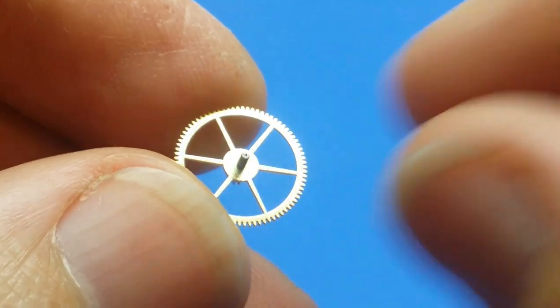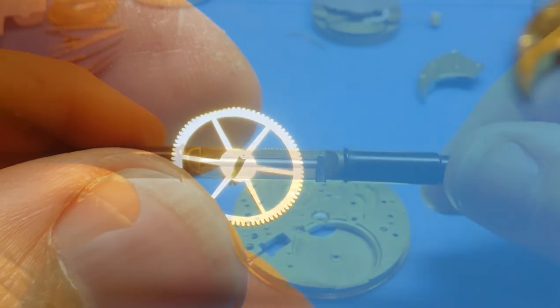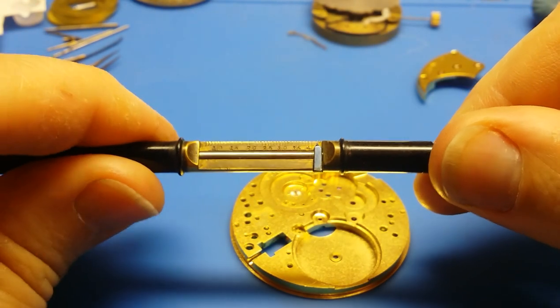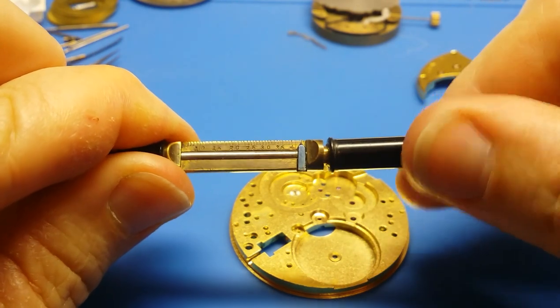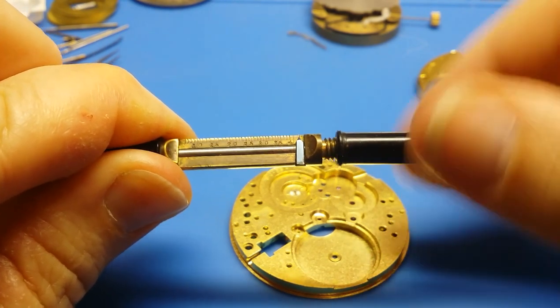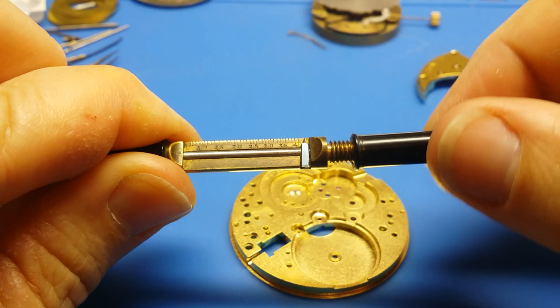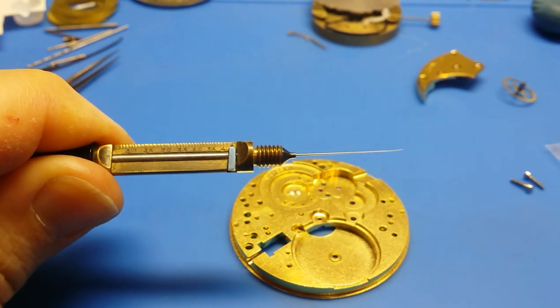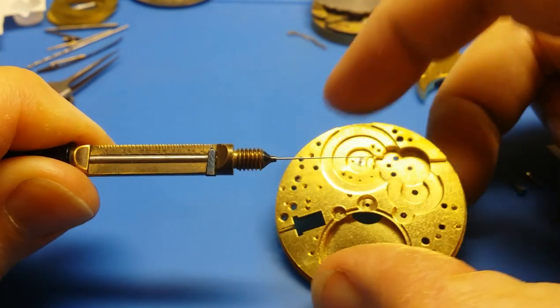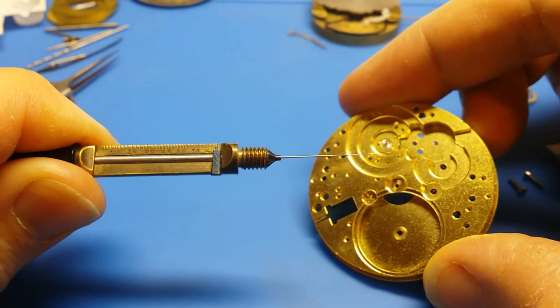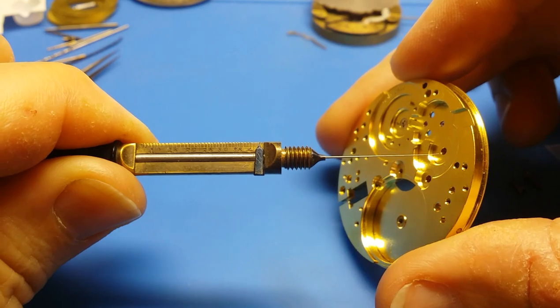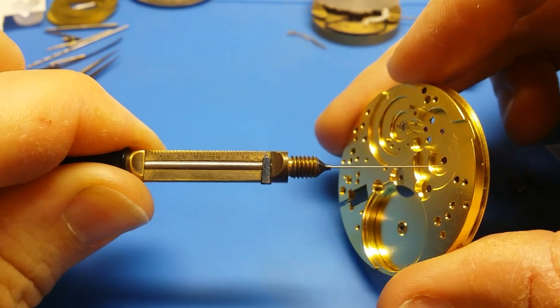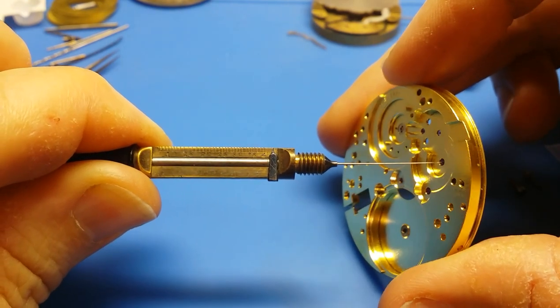This is a fourth wheel from a Zenith Pocket Watch that has the extended pivot broken off of it, the pivot that the second hand rides on. And it's so clearly broken off that I cannot measure the diameter that the pivot should be.